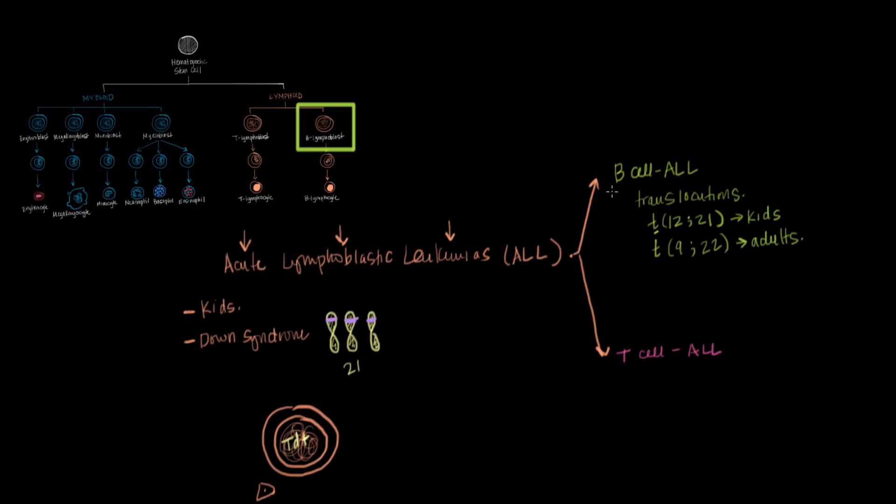So these translocations are really helpful or super helpful. First they help us diagnose the disease and secondly they help us determine the prognosis of the disease. And I say that because it turns out that the t(12;21) translocation is associated with a better prognosis. And that's because the leukemia cells that have this translocation inside them, the cells themselves are more responsive to treatment, to chemotherapy.